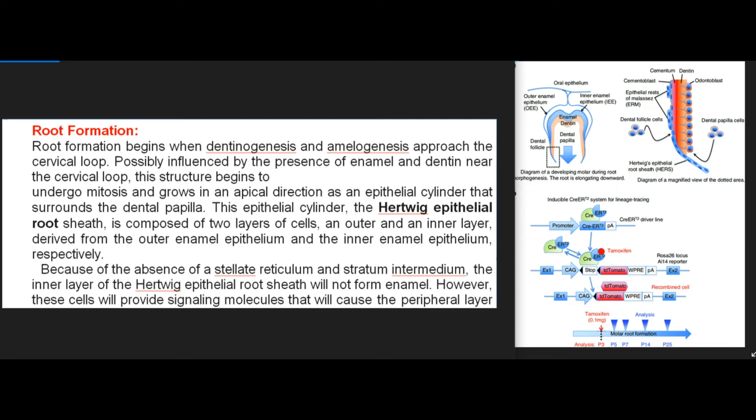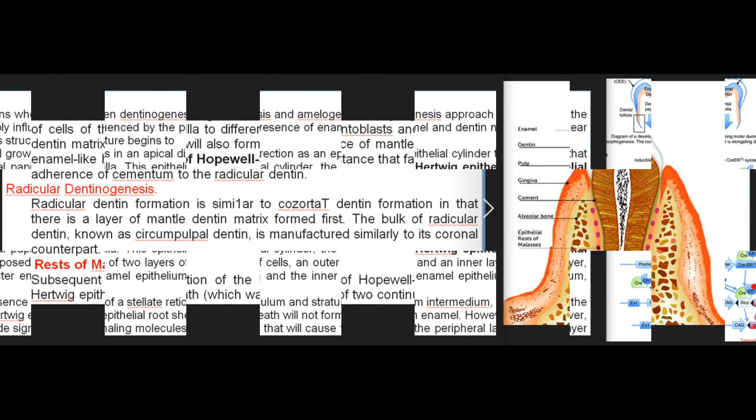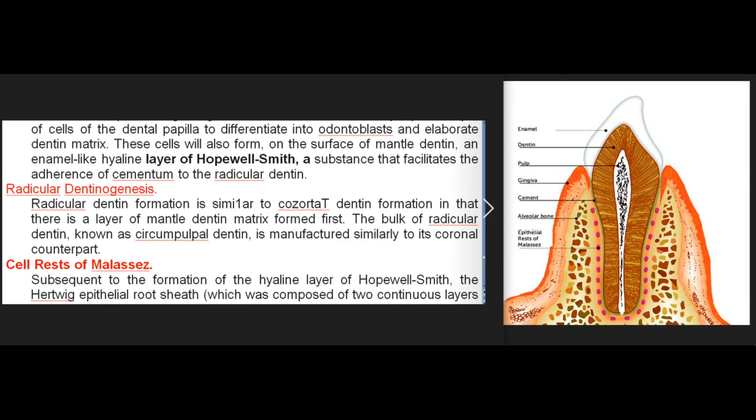Root formation begins when dentinogenesis and amelogenesis approach the cervical loop. Possibly influenced by the presence of enamel and dentin, this structure begins to undergo mitosis and grows in an apical direction as an epithelial cylinder that surrounds the dental papilla — the Hertwig epithelial root sheath. It is composed of two layers of cells, an outer and inner layer derived from the outer enamel epithelium and inner enamel epithelium respectively. Because of the absence of a stellate reticulum and stratum intermedium, the inner layer of the Hertwig epithelial root sheath will not form enamel; however, these cells will provide signaling molecules that cause the peripheral cells of the dental papilla to differentiate into odontoblasts and elaborate dentin matrix. They will also form on the surface of mantle dentin an enamel-like hyaline layer of Hopewell-Smith, a substance that facilitates the adherence of cementum to the radicular dentin.